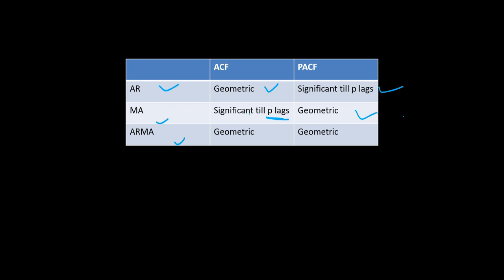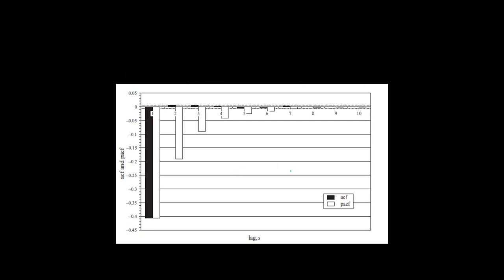So ACF and PACF behave totally opposite between AR and MA processes. In the ARMA process, both ACF and PACF follow a geometric decay. Using these rules that we have tabulated, we will try to identify which time series process is associated with a particular ACF and PACF plot. Let's go to an example.